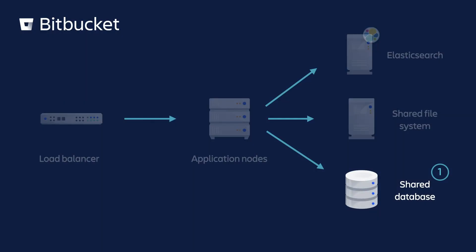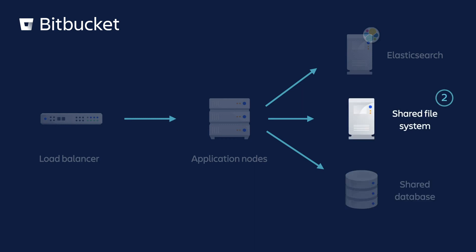For those ready to build their cluster, start by provisioning your shared database. Unlike server or non-cluster Data Center architectures, a clustered approach requires an external database. Once you've provisioned your shared database, begin setting up your shared file system. This file system must be accessible via NFS as a single mount point with the NFS lock service enabled. Before migrating data from your Bitbucket server instance, make sure the shared subdirectory of your Bitbucket server home directory and database are backed up.